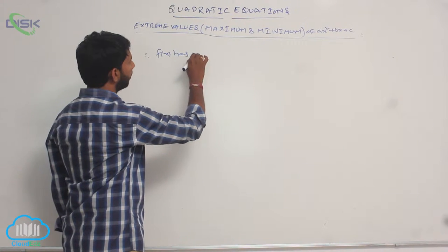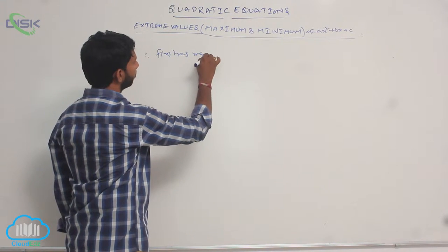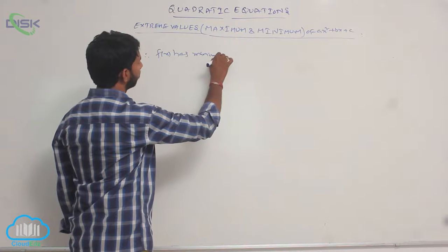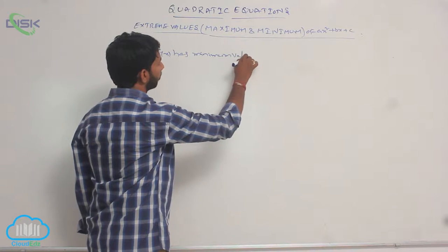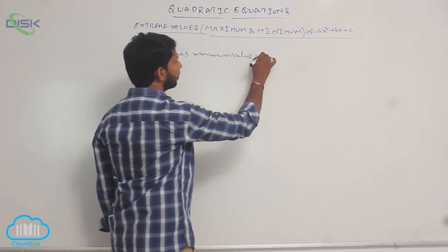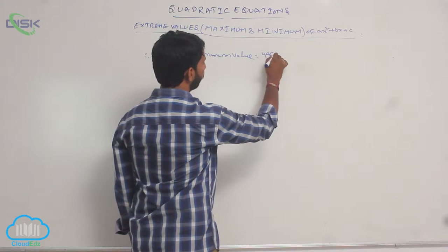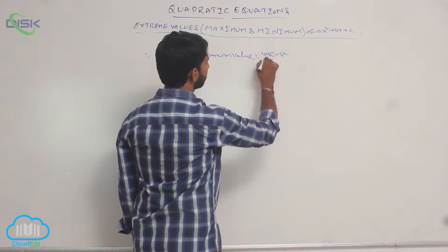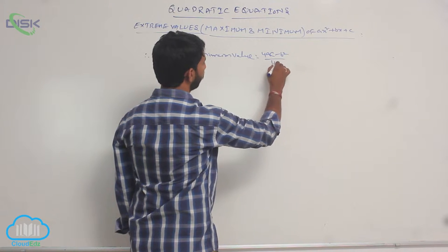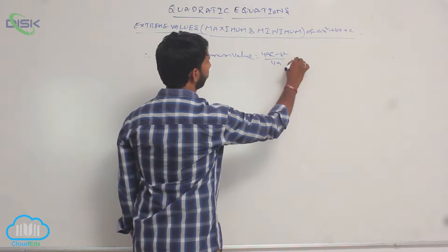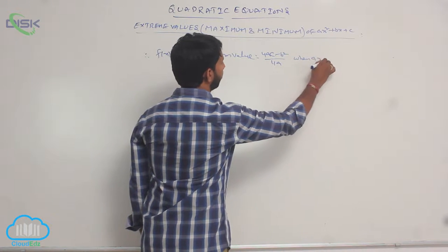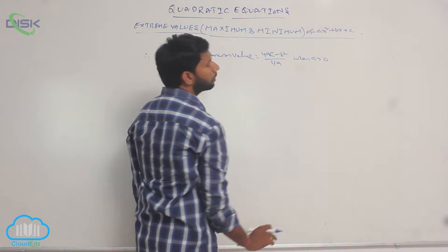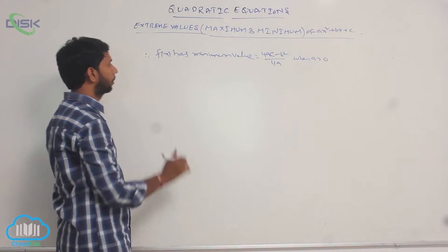f of x has minimum value equal to (4ac minus b squared) by 4a when a is greater than 0.